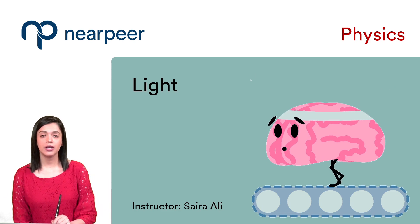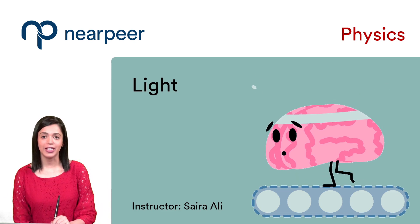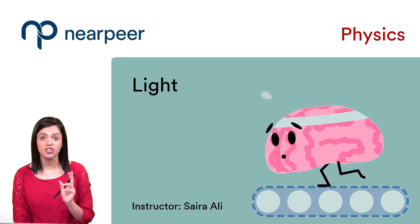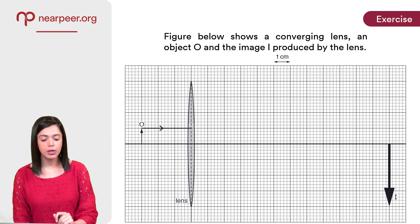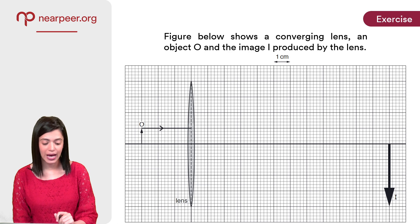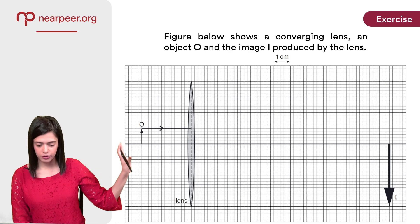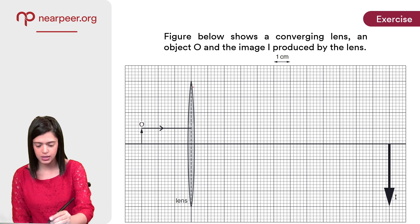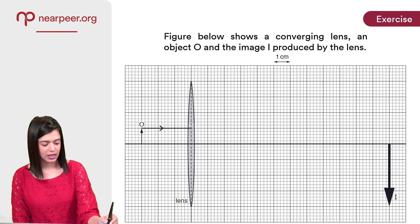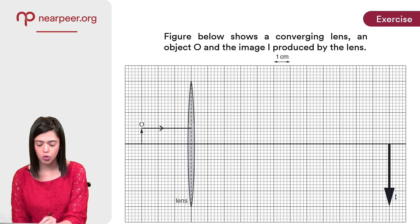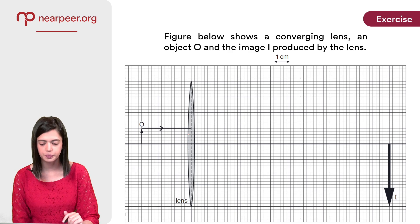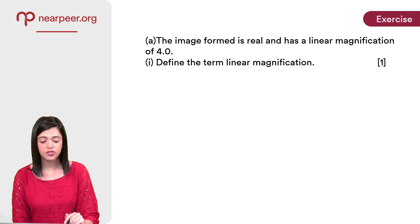Welcome back everyone. Let's try out another long question from the topic ray diagrams in converging lenses — it's such an important topic we can never have enough practice. The figure below shows a converging lens, an object O, and an image I produced by the lens. On the grid we have the thin lens, the object is shown, and the image has already been drawn for us. There is a ray of light emerging from the object but its path is incomplete.